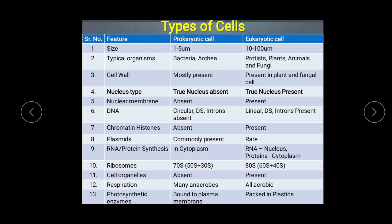The ribosomes are different in prokaryotic and eukaryotic cells — they are of the 70S type in prokaryotic cells and 80S type in eukaryotic cells. The subunits also differ: in prokaryotes it is 50S plus 30S, while in eukaryotes it is 60S plus 40S. Cell organelles such as mitochondria, chloroplast, and endoplasmic reticulum are present in eukaryotic cells and absent in prokaryotic cells.